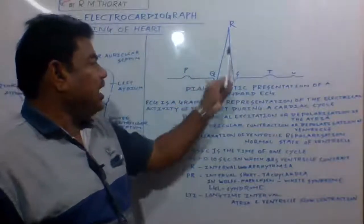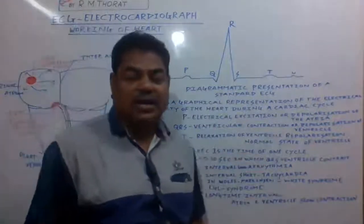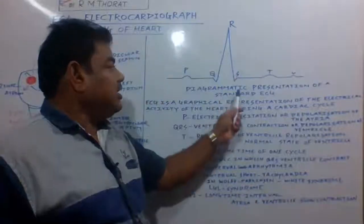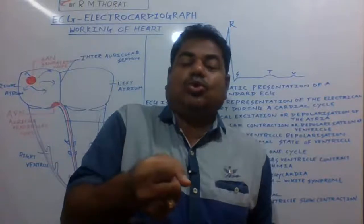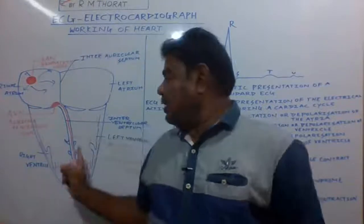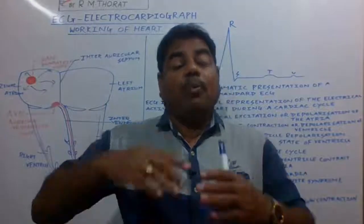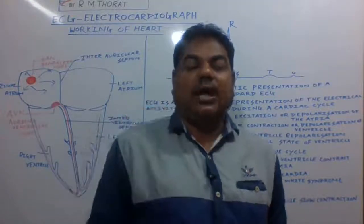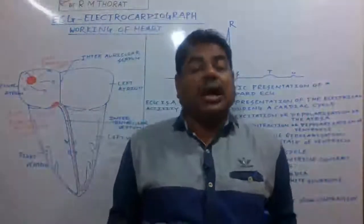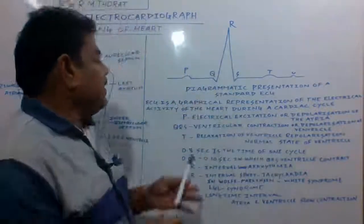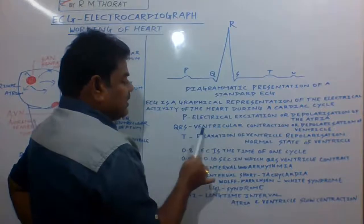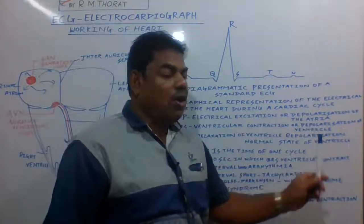The QRS complex represents ventricular contraction — depolarization of the ventricles. When the ventricles contract, a big graph peak appears because the ventricles contract more powerfully. The left ventricle must circulate oxygenated blood throughout the entire body, and the right ventricle forces deoxygenated blood into the pulmonary artery towards the lungs to release CO2. Because of this stronger contraction, a large QRS complex forms on the graph.